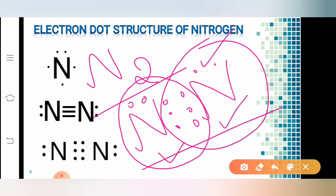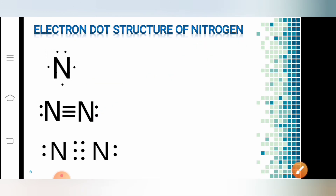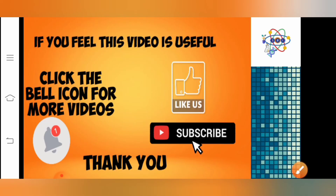We have understood how to write the electron dot structure by following some simple steps. In the next part, I will be explaining how to write the electron dot structure for methane as well as ammonia. Thank you.